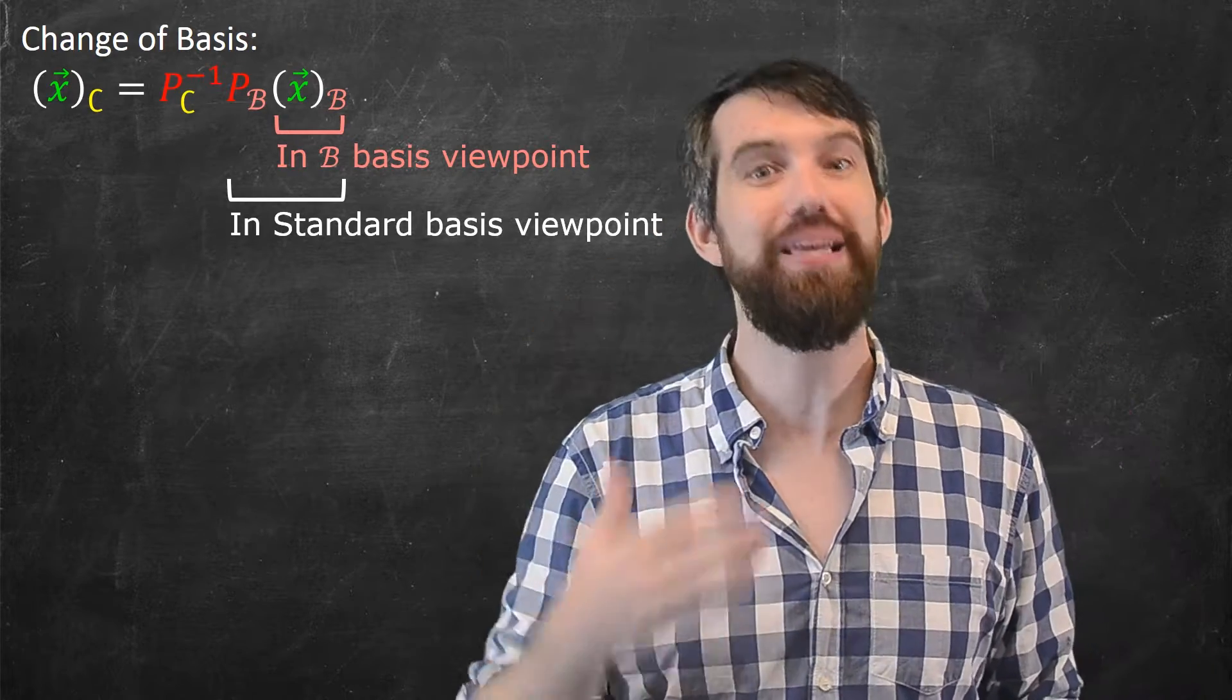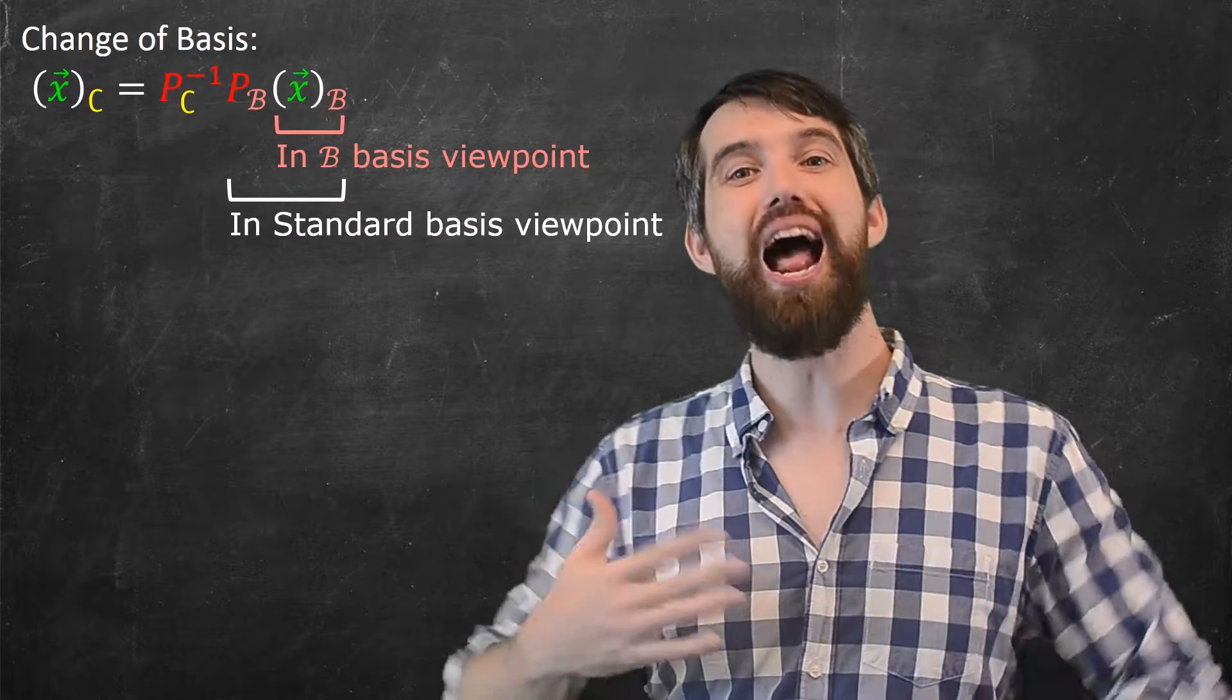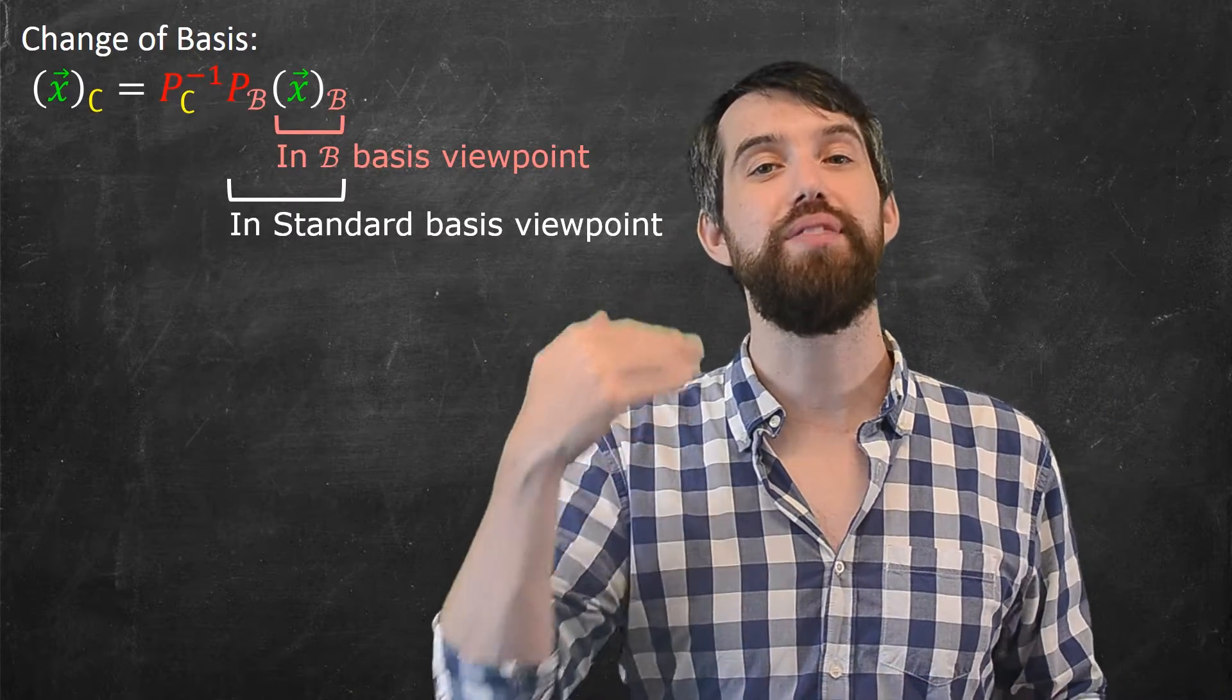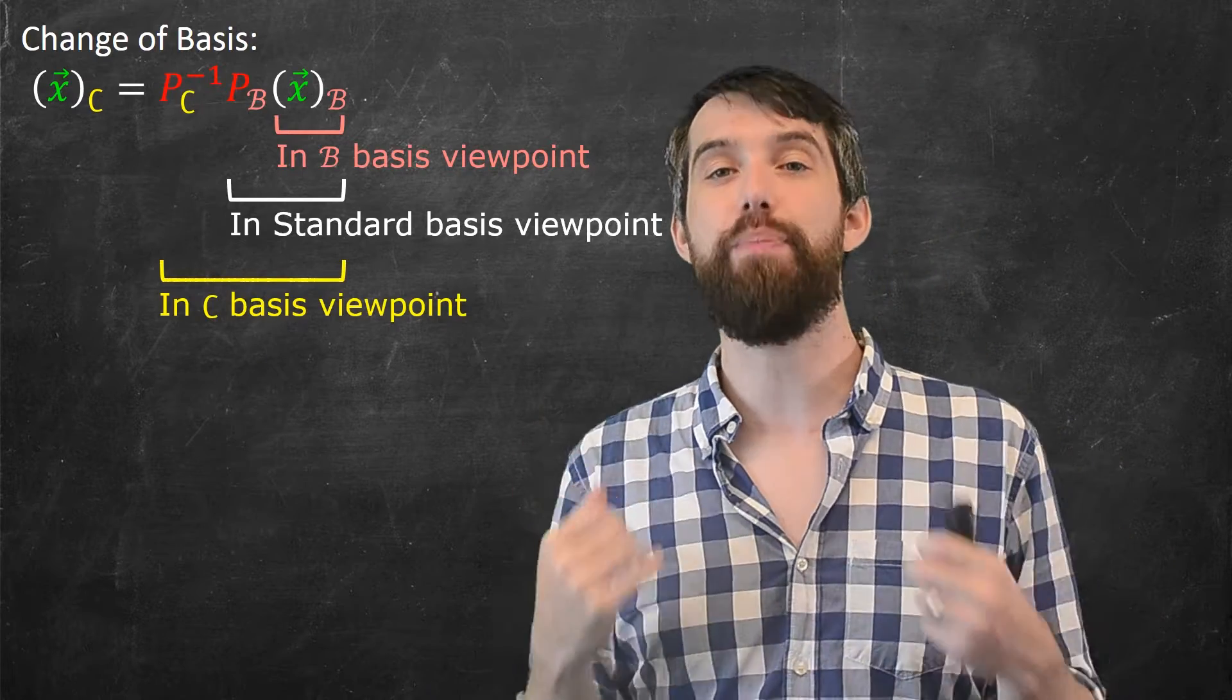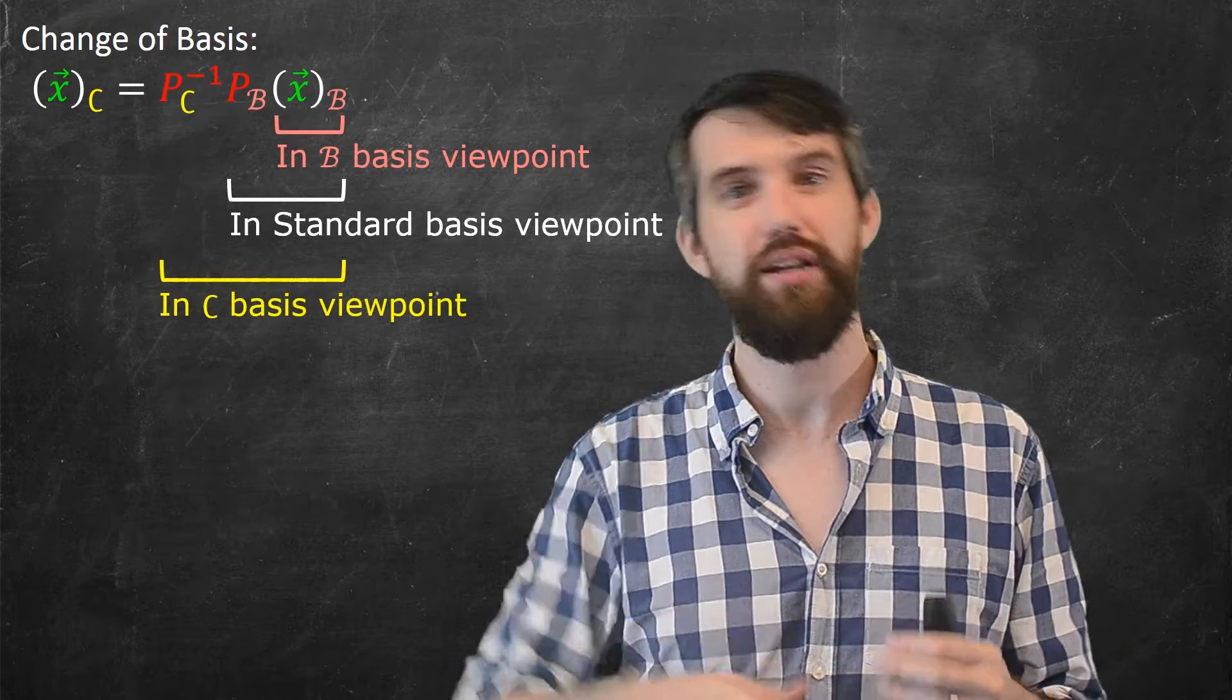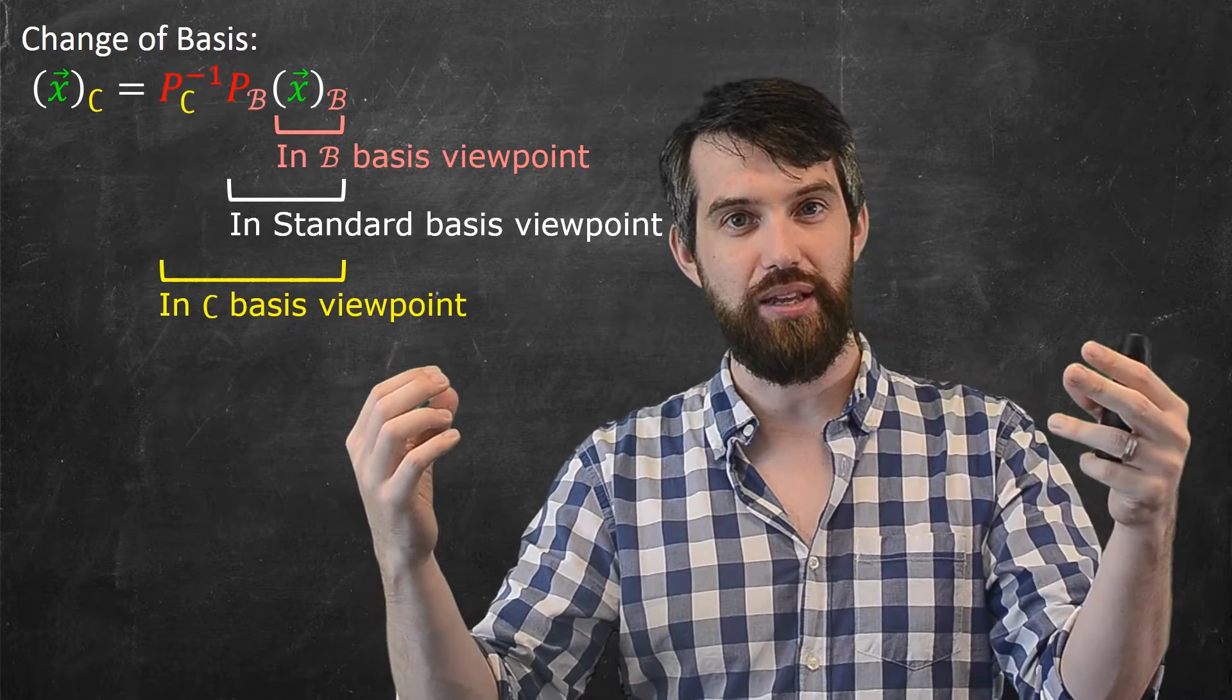And then finally, the pc inverse, that's going to convert out of the standard basis into the c basis. And so when I do the multiplication of all of them, I end up with a perspective in the c basis. So I start in the b, I end up in the c.